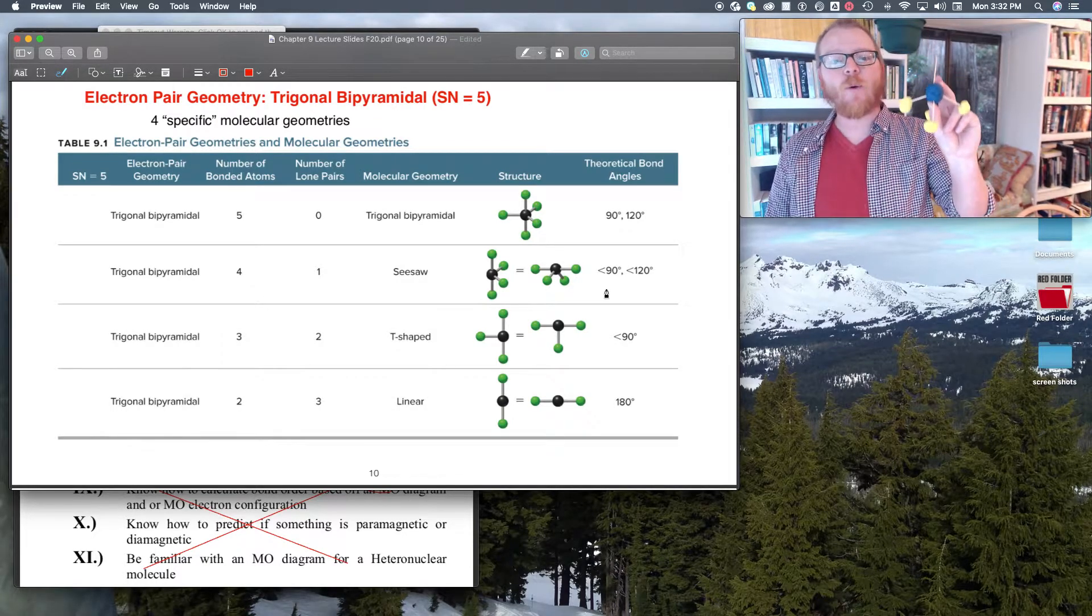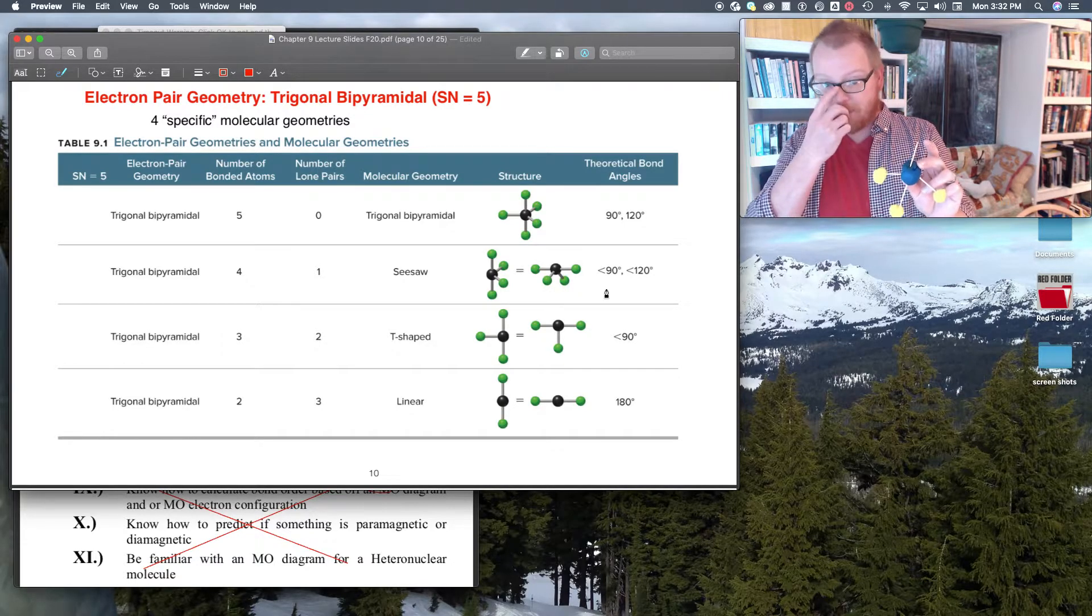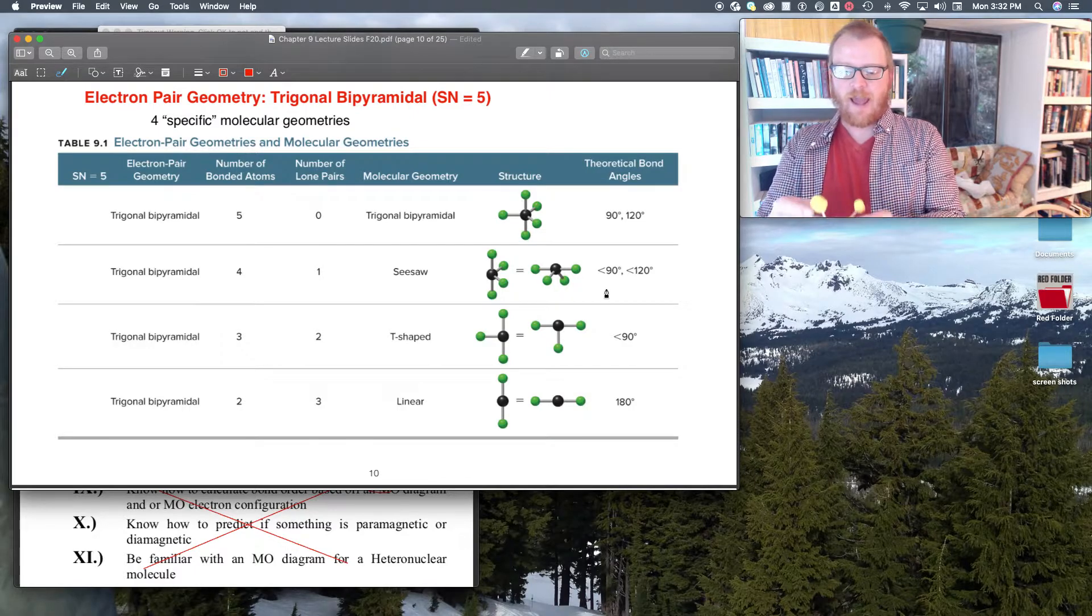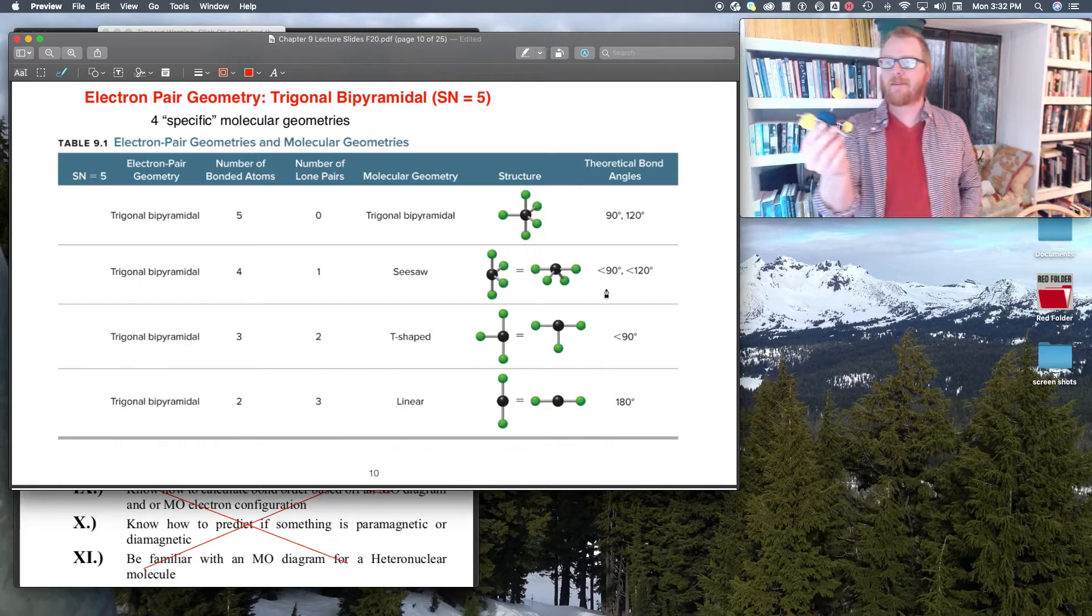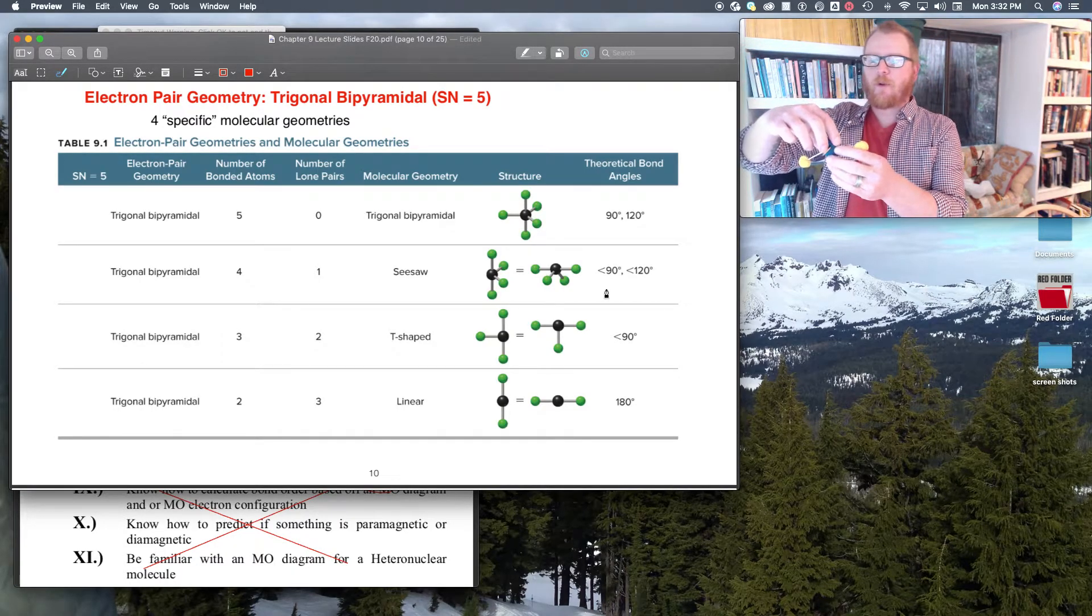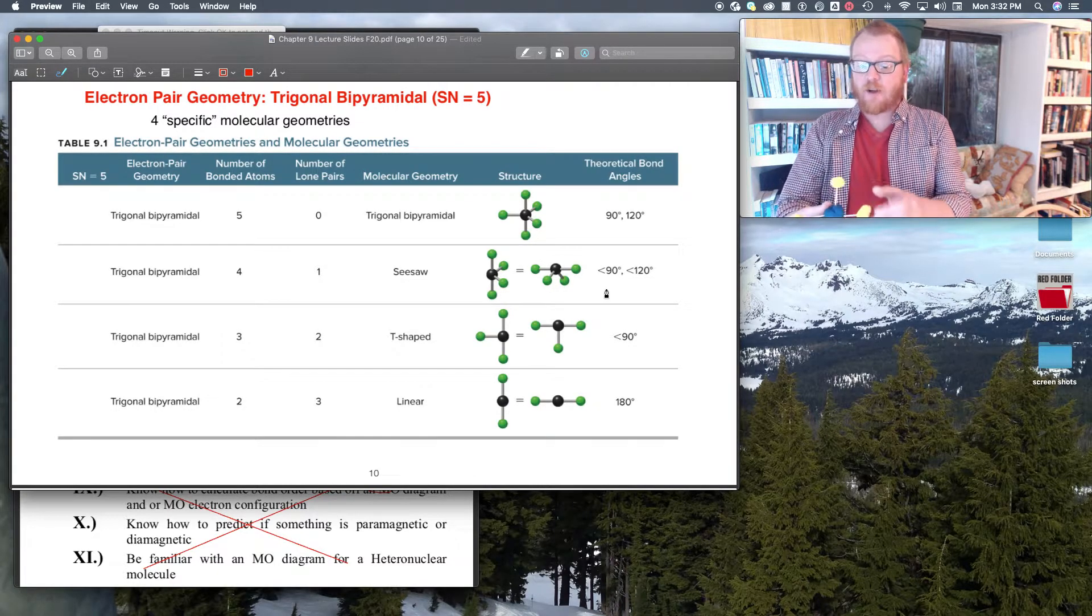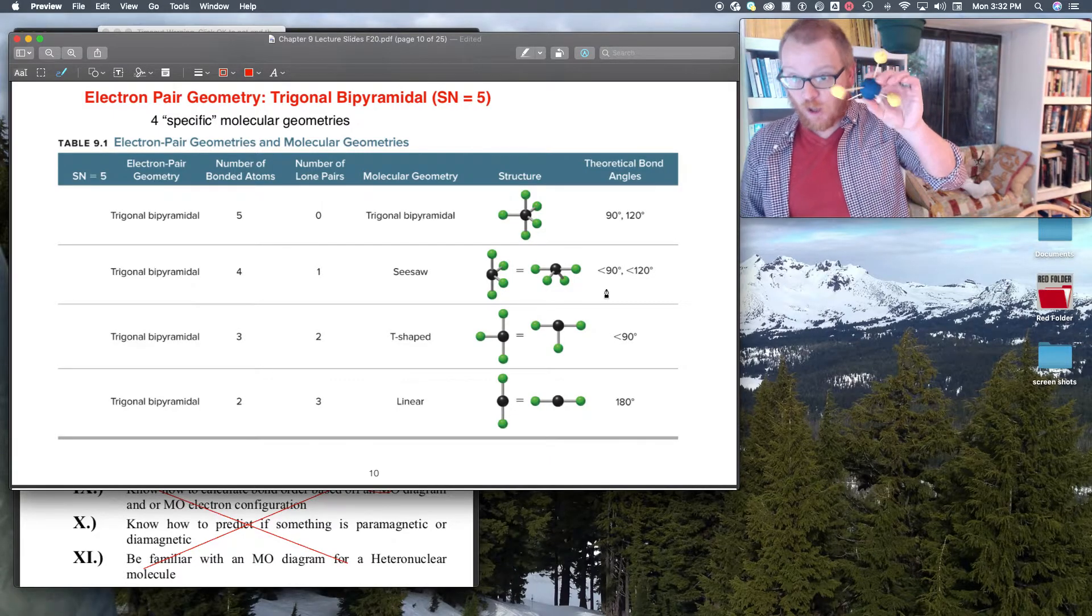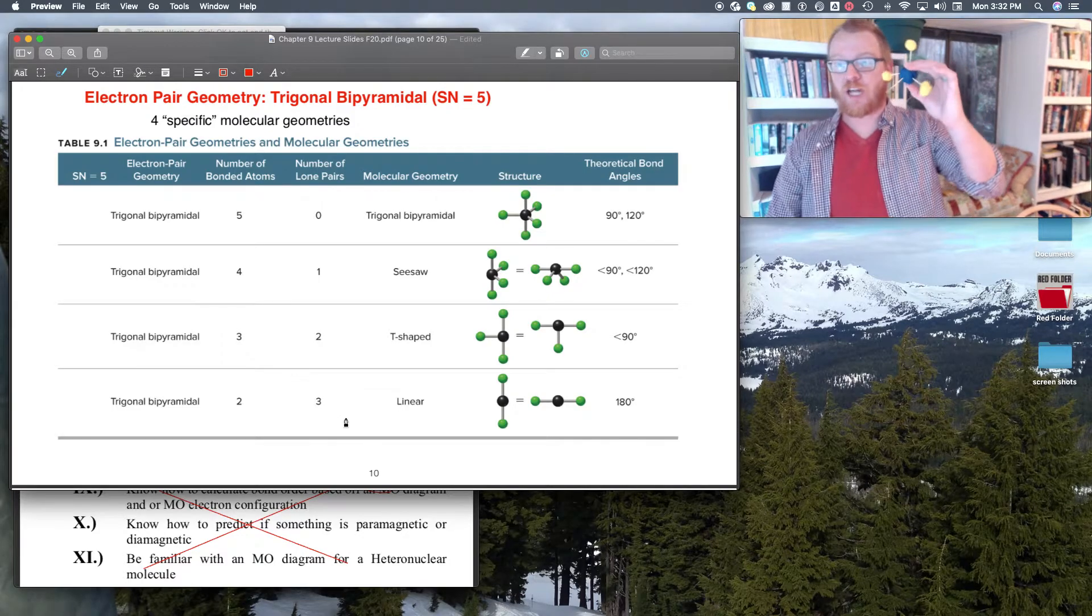So now what happens if I take away another atom? I can really do it just about anywhere and I end up with the same thing, T-shape, because it looks like a T. And remember, I still have these lone pairs. They haven't gone missing. I have to have those lone pairs there to still make this trigonal bipyramidal shape.